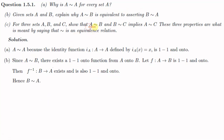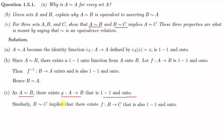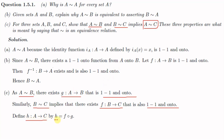For Part C, let us assume that A is similar to B and B is similar to C. Since A is similar to B, there exists a function g from A to B which is one-to-one and onto. Also, since B is similar to C, there exists a function f from B to C which is one-to-one and onto. To show that A is similar to C, we have to show that there exists a function from A to C which is one-to-one and onto. For that, we define the function h from A to C as h equals f composition g. Since g is from A to B and f is from B to C, f composition g will be from A to C.